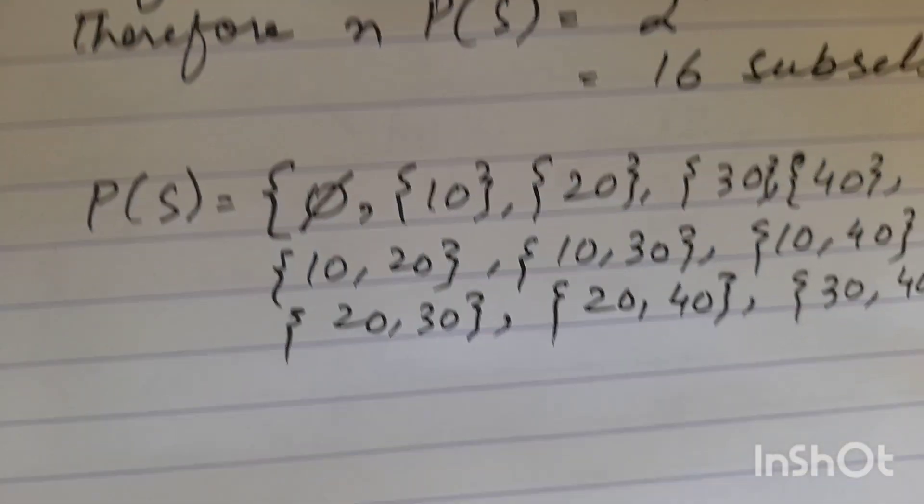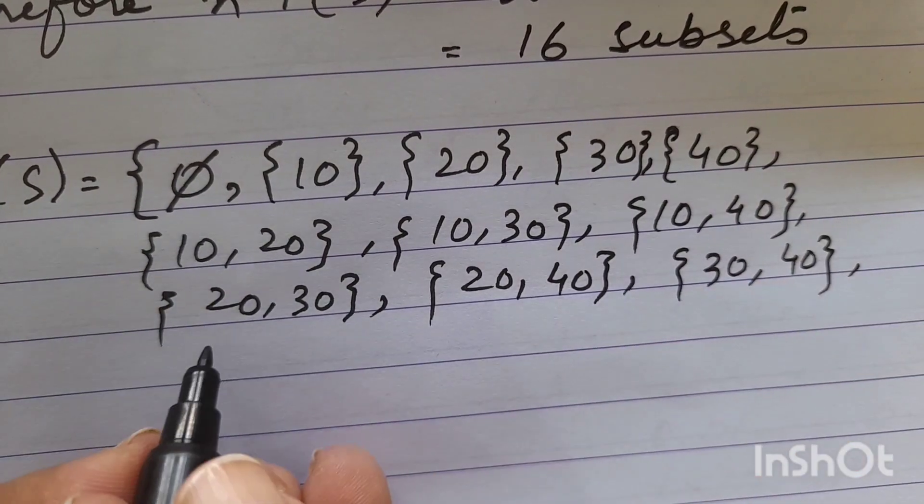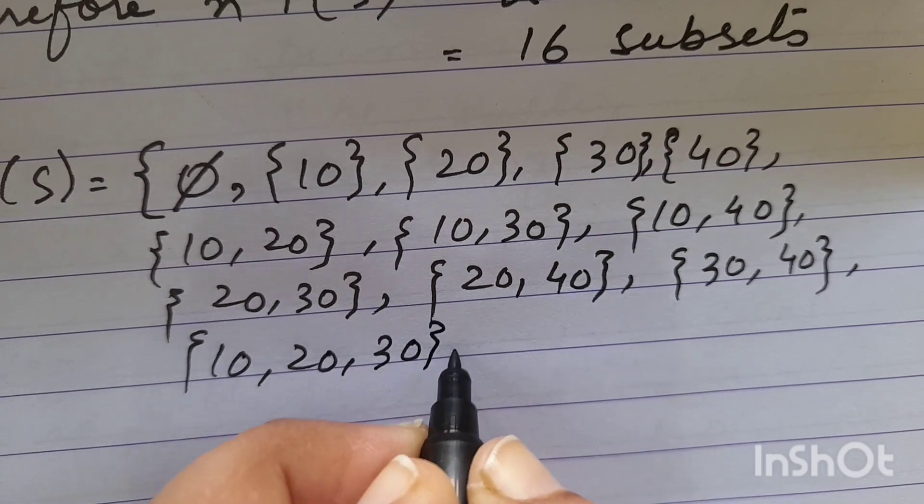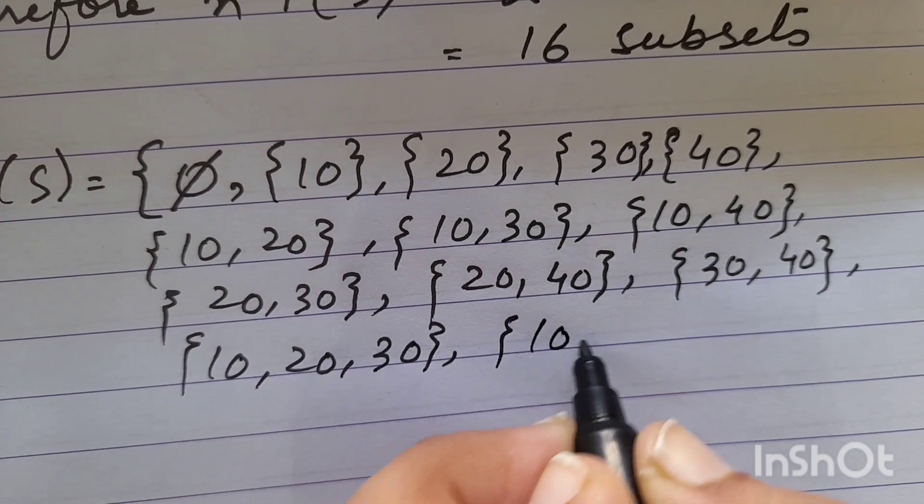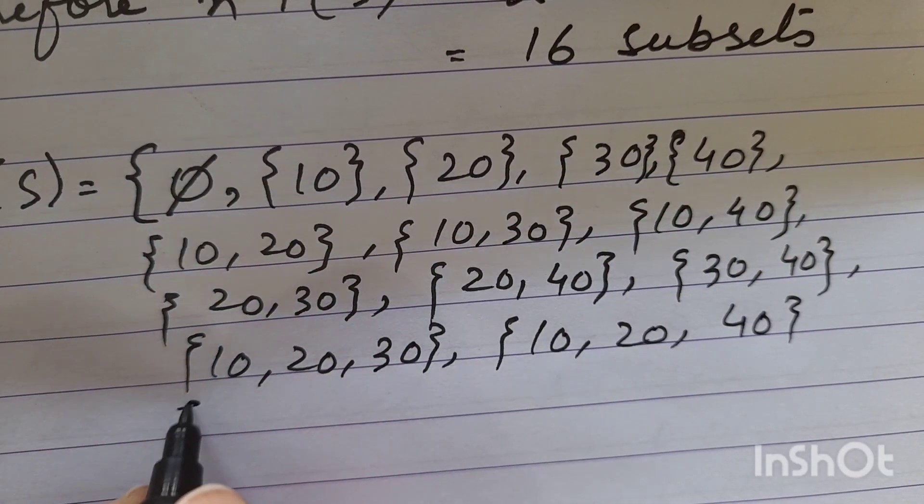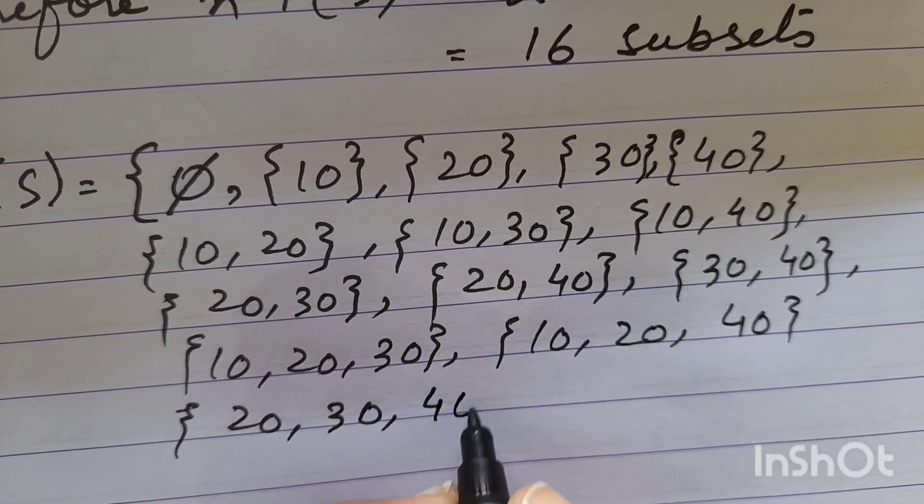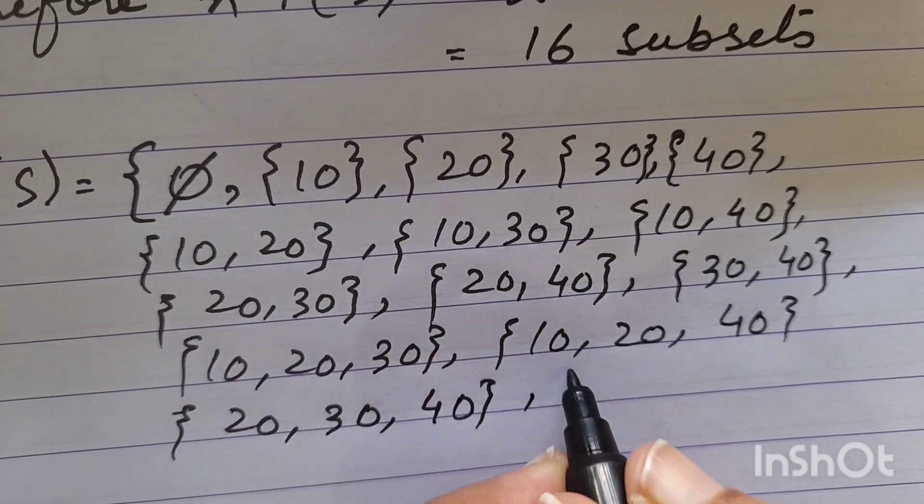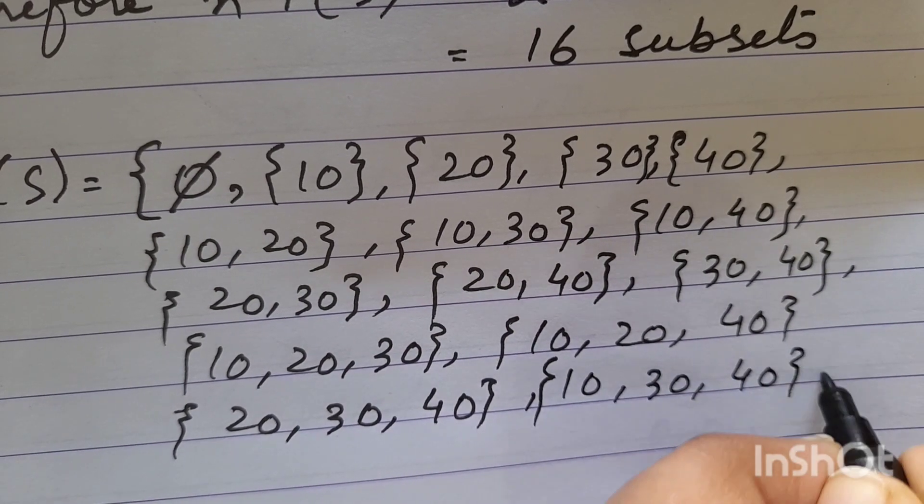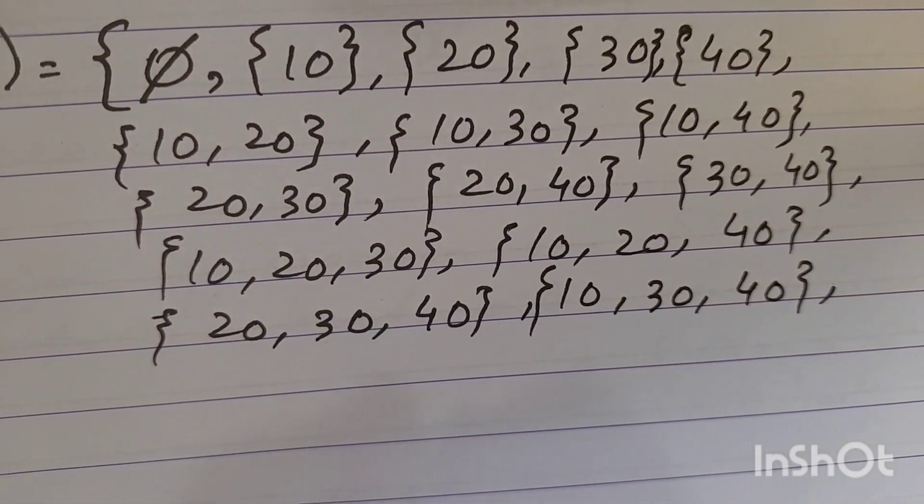After that, we will make trios. So after that 10, 20, 30; 10, 20, 40; 20, 30, 40; and 10, 30, 40. Now we have made trios.